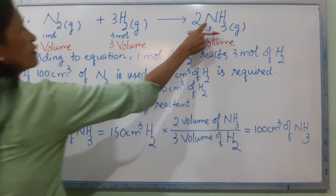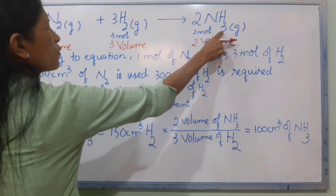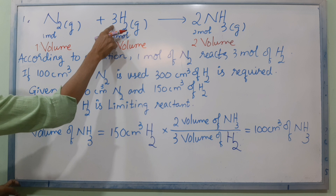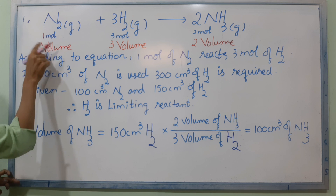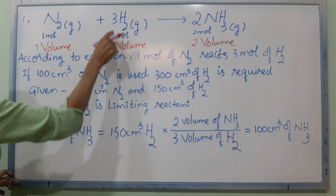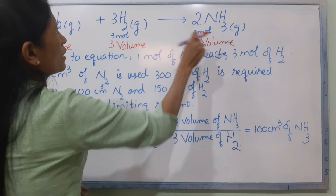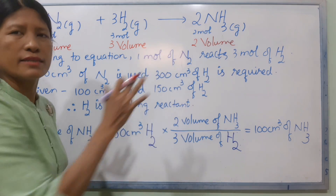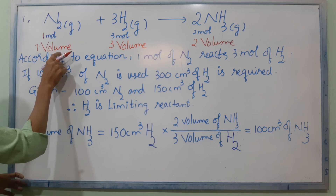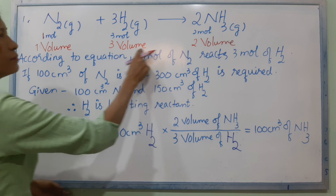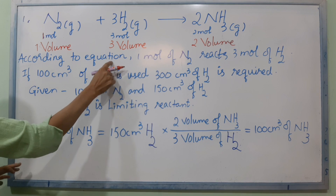N2 gas plus H2 gas gives NH3 ammonia gas. The ratio is 1 more nitrogen, 3 more hydrogen, 2 more ammonia. According to the equation, 1 volume of nitrogen, 3 volumes of hydrogen, 2 volumes of ammonia.